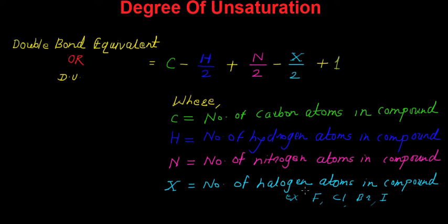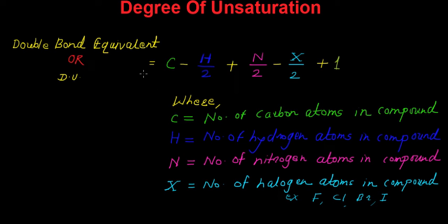For example, if fluorine, chlorine, bromine, or iodine is present, we put that number into this mathematical equation and one can calculate the double bond equivalent or degree of unsaturation.